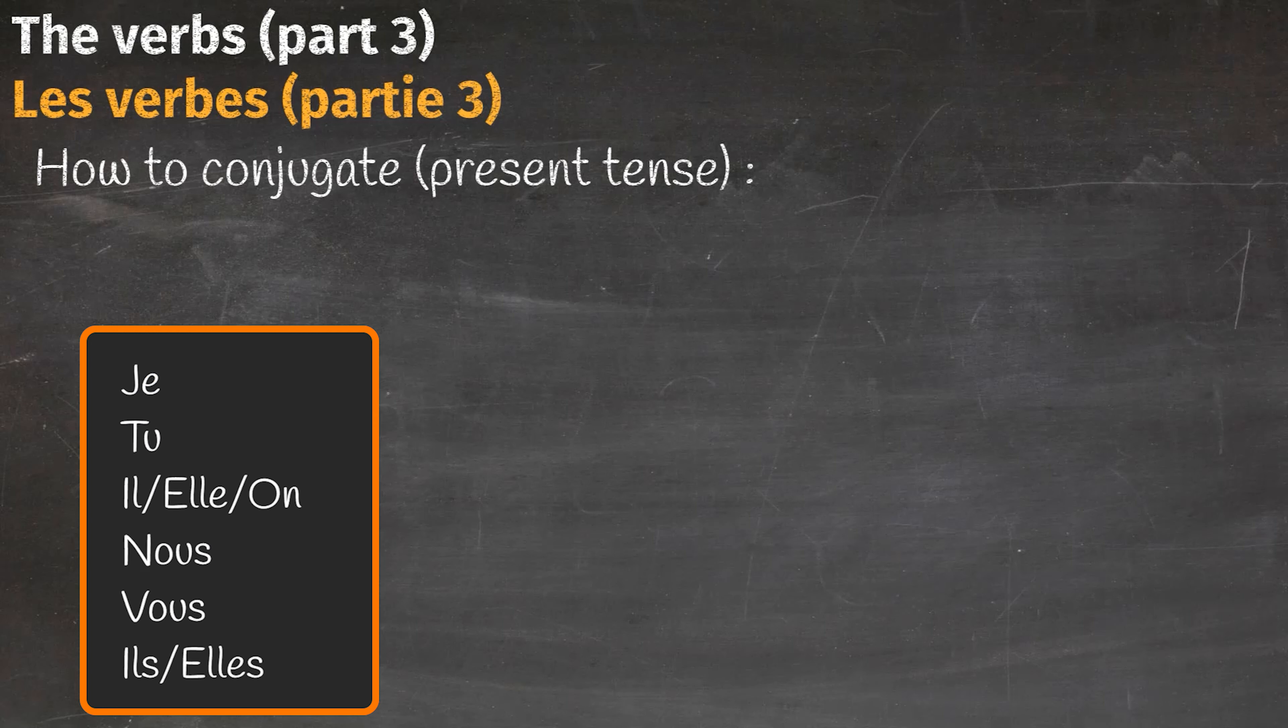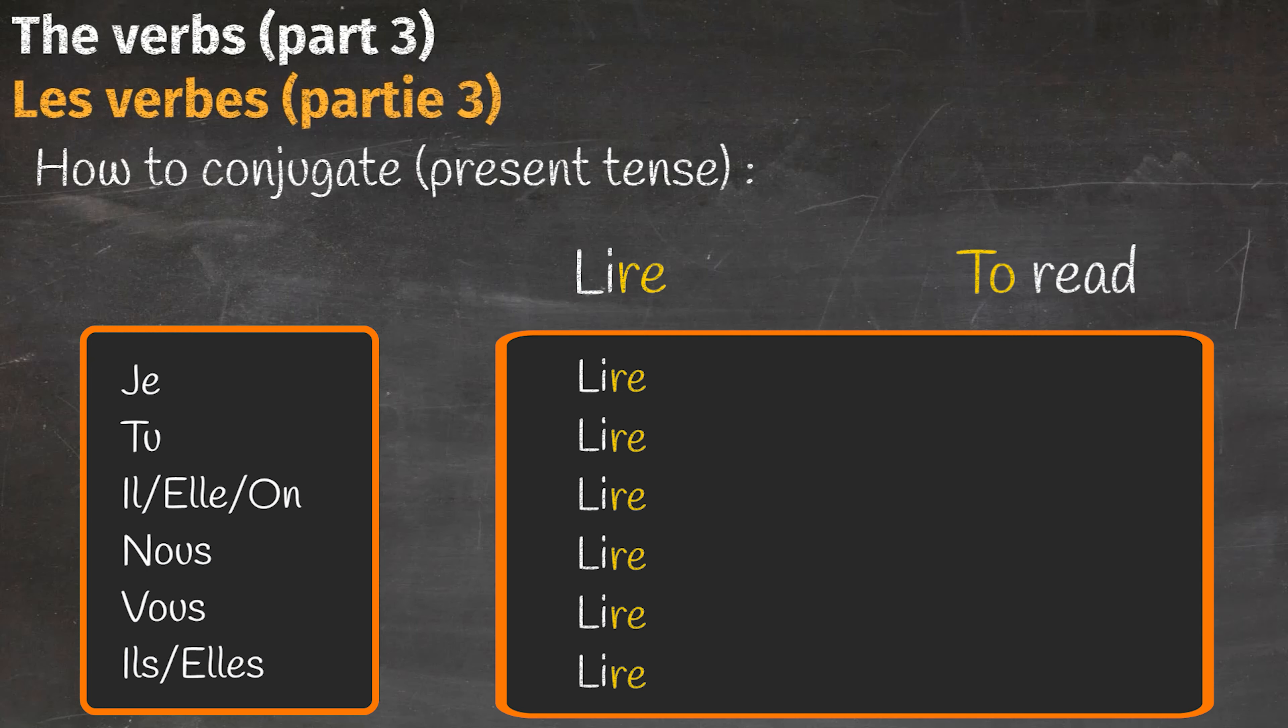Another example: to read - lire. Once again, we start by unboxing the verb, which means eliminating the final '-re'. Now let's assign personalities.